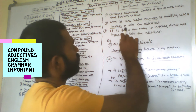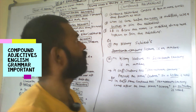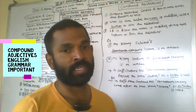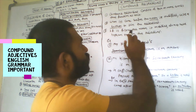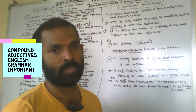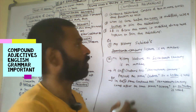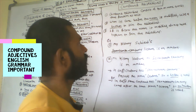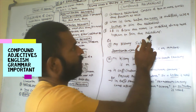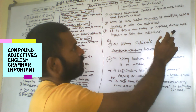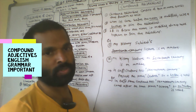Use a hyphen to join the adjectives when the compound adjective comes before the noun it modifies. When the compound adjective comes after the noun, the adjectives joined by hyphen rule changes — if both adjectives follow the noun that they modify, then don't use the hyphen to join the adjectives.